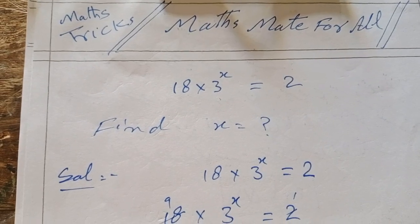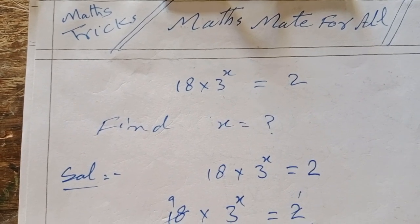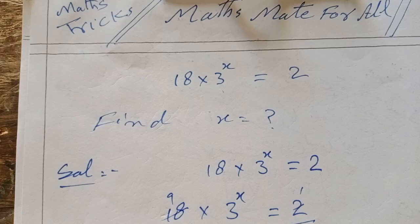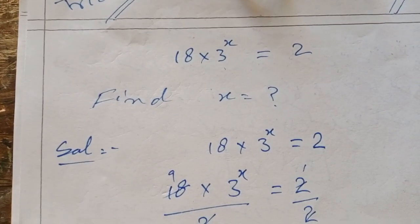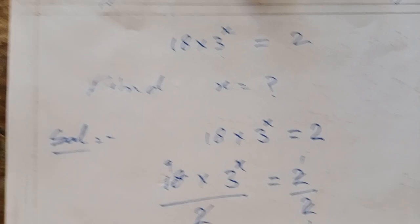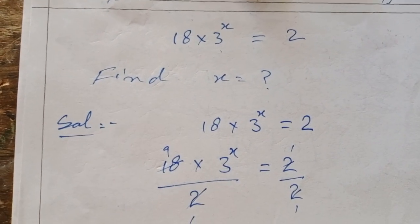18 multiplied by 3 to the power x is equal to 2. How do you find x? Now, solution: 18 times 3 to the power x is equal to 2.